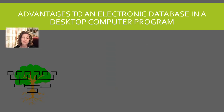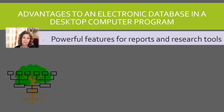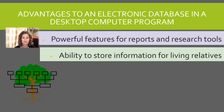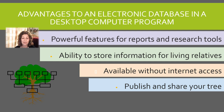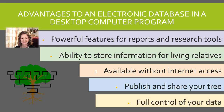What are the advantages to having an electronic database in a desktop computer program? Well, you get powerful features for reports and research tools that online trees simply don't have. It gives you a place to store information for living relatives, like addresses and phone numbers. It's available without internet access, which is helpful if the internet goes out. You can publish and share your tree on a website, and one of the best reasons is that you have full control over your tree — if a website is down, you can still access it locally.